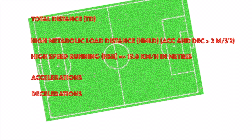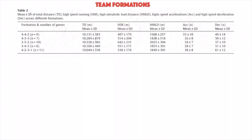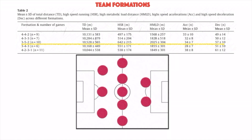The results show that at the team formation level, the 3-5-2 tactical shape is the most physical formation. It was the most demanding among all formations, with a higher total distance, a higher metabolic load distance, higher speed running, and above-average acceleration and deceleration.